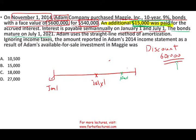We have $60,000 of discount. Adam uses the straight-line method for amortization, ignoring income taxes. The amount reported in Adam's 2014 income statement as a result of the available-for-sale investment is how much? Simply put, Adam is going to receive interest from this bond — how much interest revenue would Adam record on the income statement for the year ending 2014? The answer choices are $10,500, $15,000, $18,000, or $27,000.